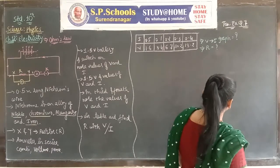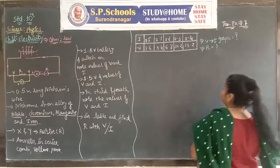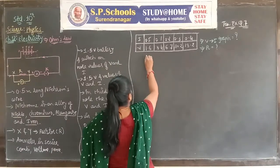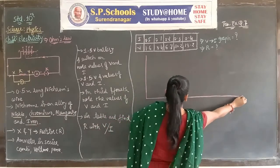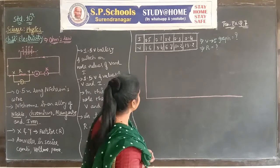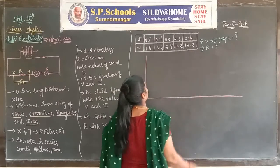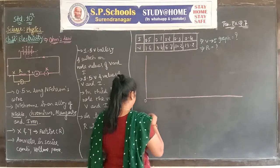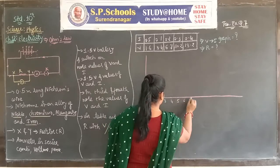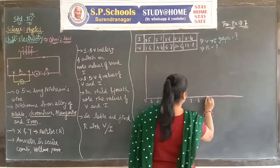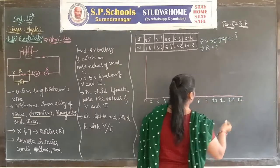Let's do it. First we draw the graph. On the X axis we take values of V up to 13.2, so we go up to 14. We mark: 1, 2, 3, 4, 5, 6, 7, 8, 9, 10, 11, 12, 13, 14 on the X axis.